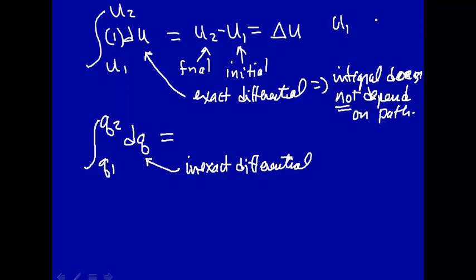So here you have U1, here you have U2, you can go this way, you can go some other path, you can go some other path. Delta U is a constant. No matter which path you go, you get the same delta U.